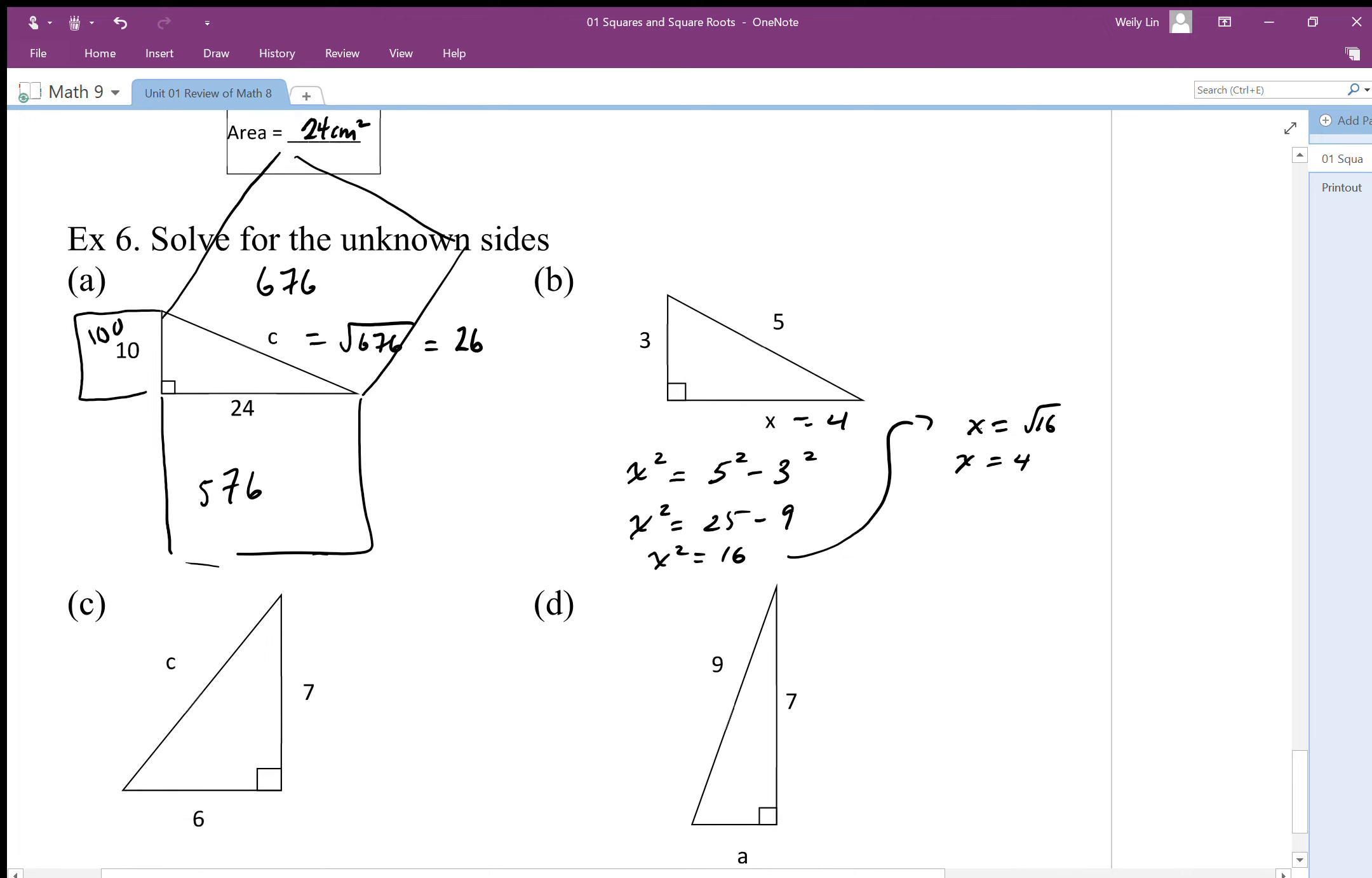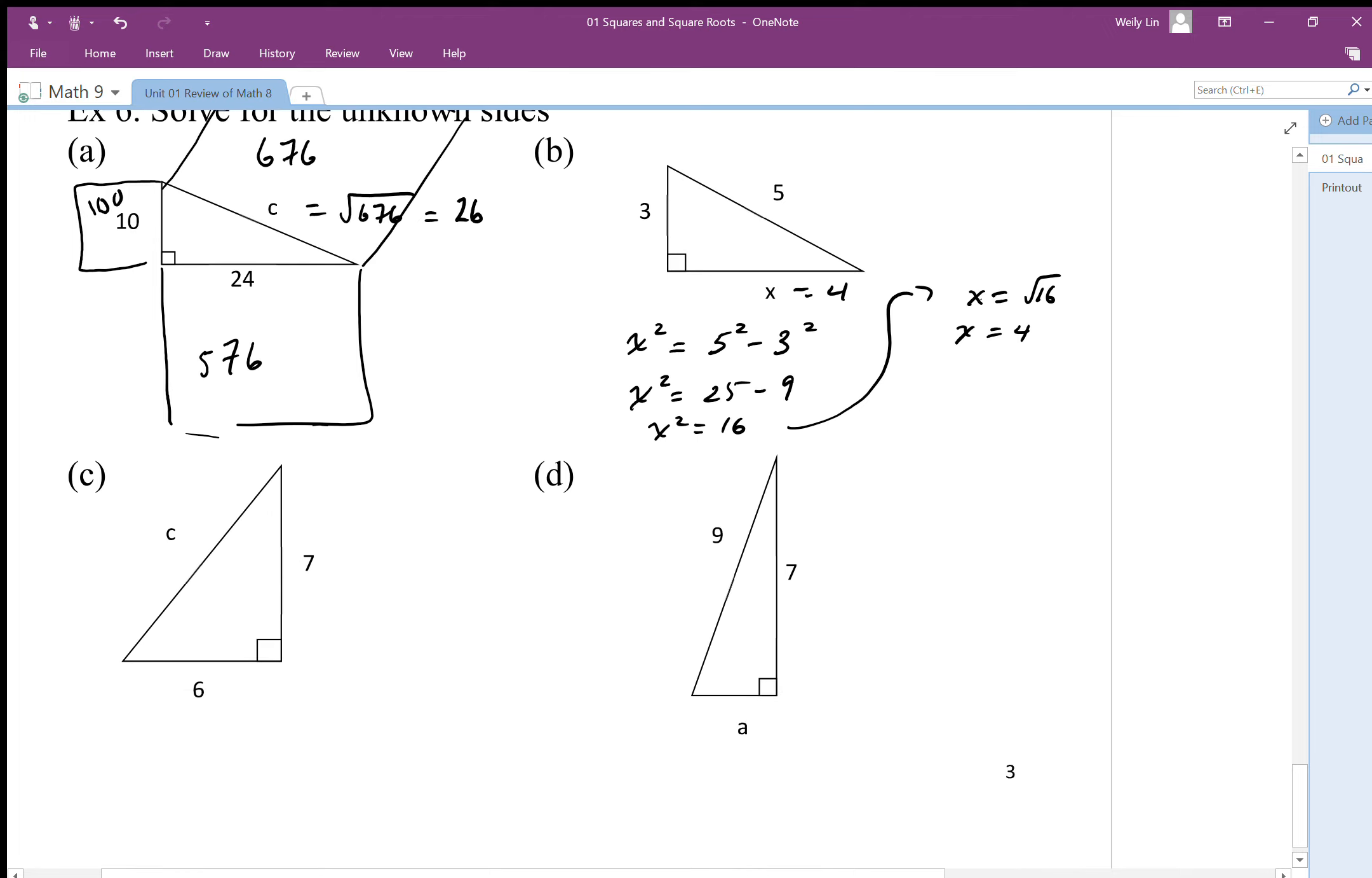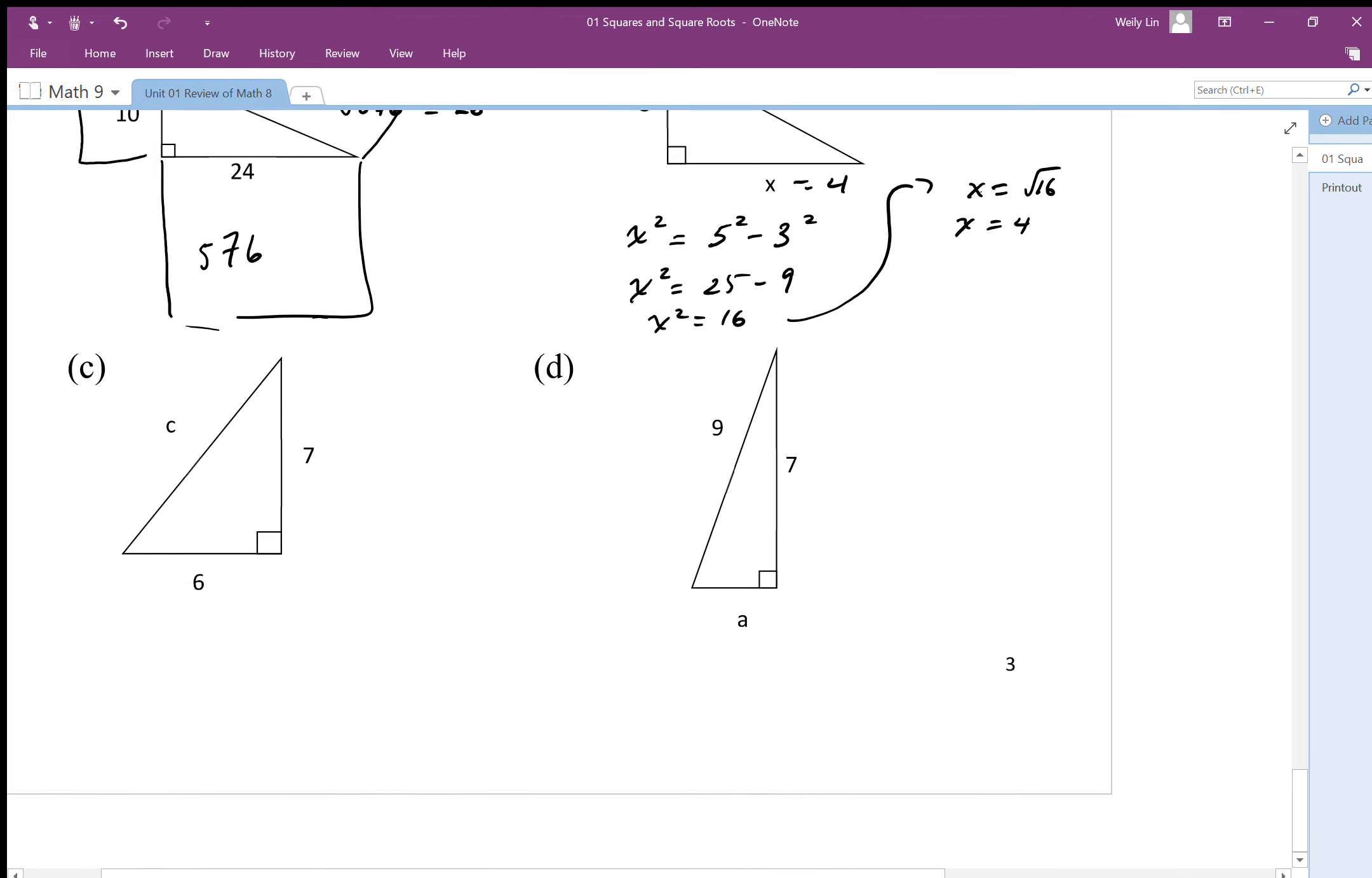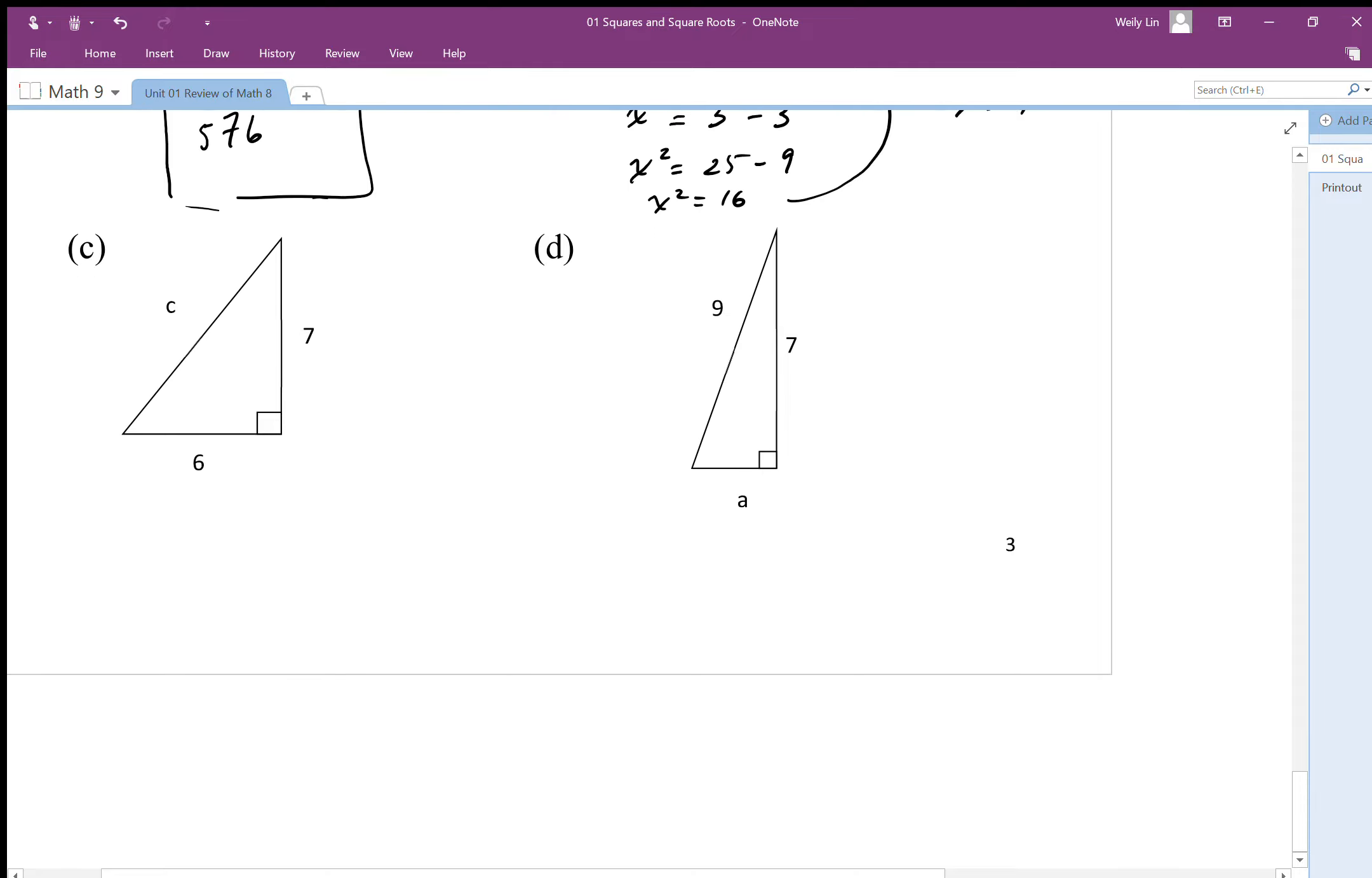Now these happen to be what we call Pythagorean triples, so we end up with whole number side lengths. But most triangles don't have three lengths that are whole numbers. So let's do this one here.